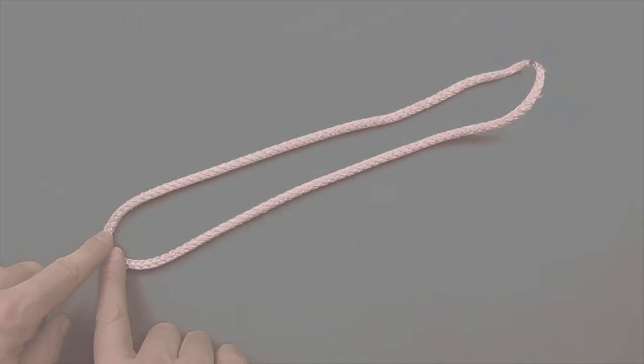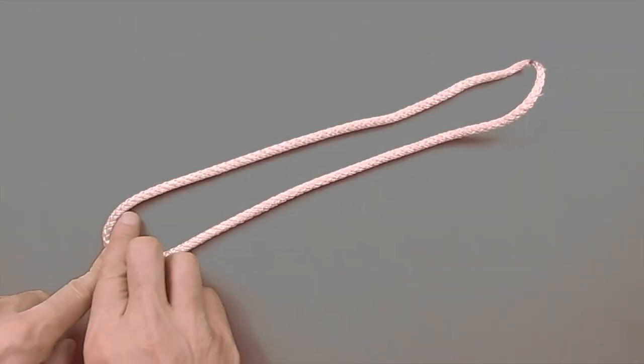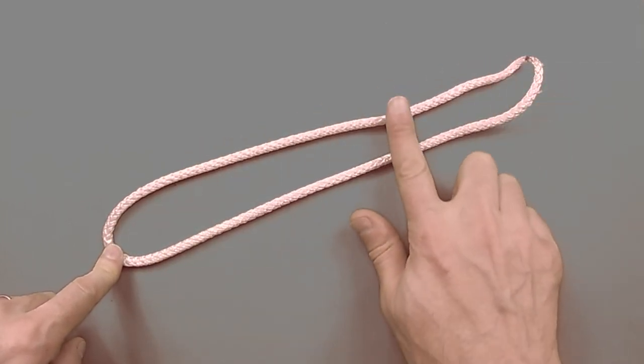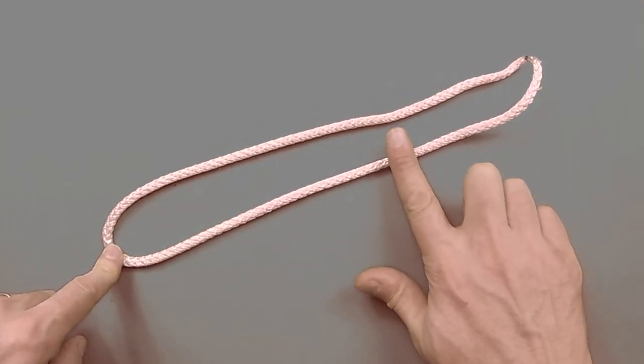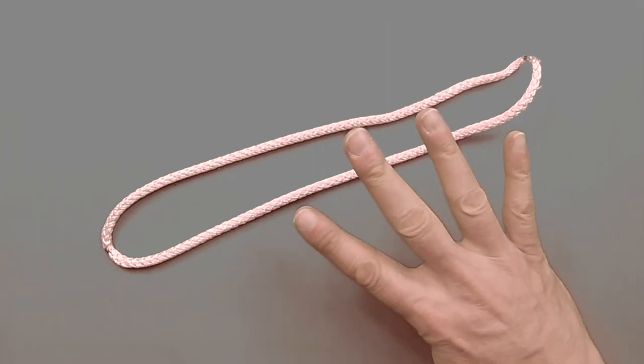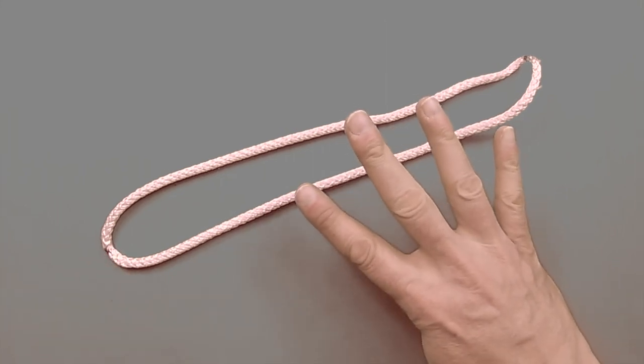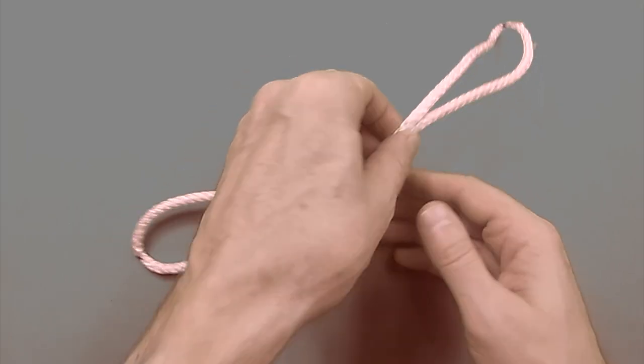To ensure you get the most strength out of your soft shackle, you want to start with the Dyneema loop that has the core running inside the majority of the way up. It's key to have four widths at the point where you're going to tie your overhand knot to create your soft shackle.